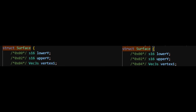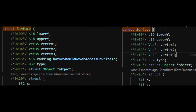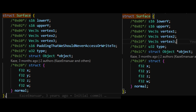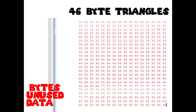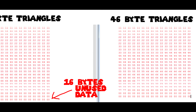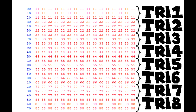We'll start pretty simple and tame. Let's look at these two versions of a struct for a collision triangle for my Nintendo 64 game. The left side has a 2-byte padding that we should never access or write to. Without this padding, this struct would be 46 bytes in size, and with it, it's 48 bytes. 48 is a multiple of 16, which means it will be aligned to the cache lines in the data cache of our N64.